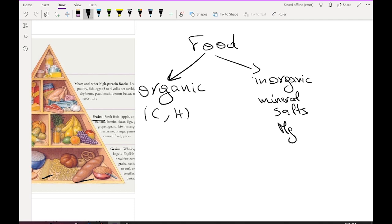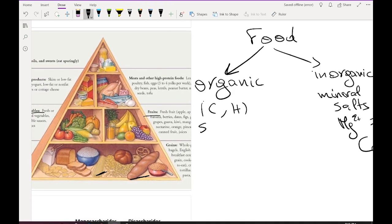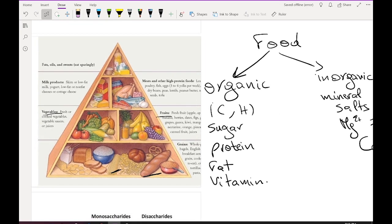Inorganic nutrients include mineral salts like magnesium, zinc, iron, and calcium. Organic nutrients include sugar, protein, fat, and vitamins.